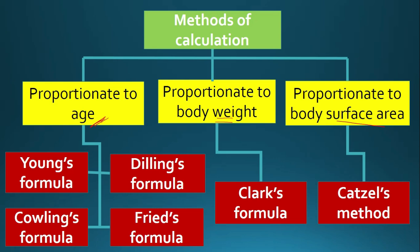Among the age-based formulas, Fried's formula is used only for infants — that is, children below one year of age. Young's formula is used for children up to 12 years of age.